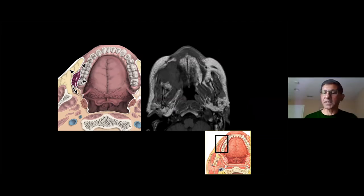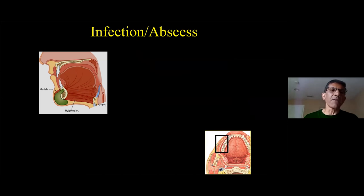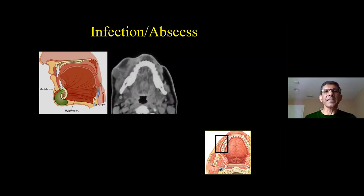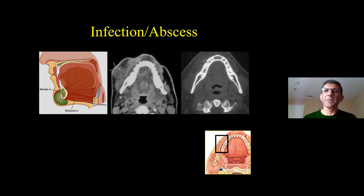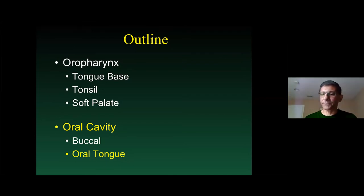Number one in the buccal area is squamous cell carcinoma. Number two is lymphoma — contrast this to the opposite side. Other considerations include infection and abscess: an infected tooth with erosion of the anterior cortex can allow pus to extend into the buccal area. On bone windows, there was a very subtle area of osteomyelitis causing infection to extend into the left buccal area. If you see something unexplained here and the patient has a fever, pay close attention to look for a rotten tooth.